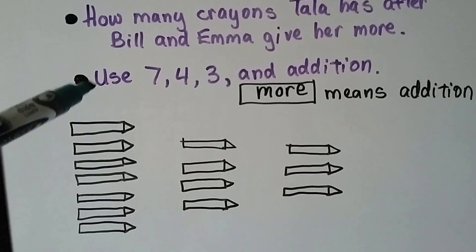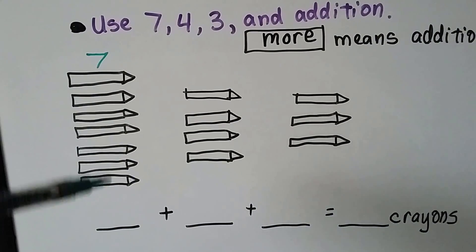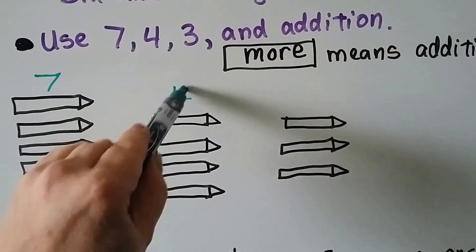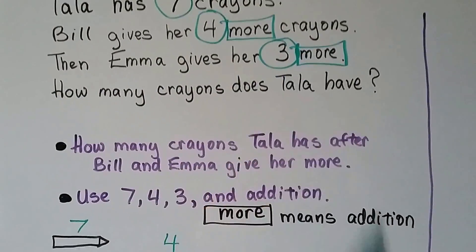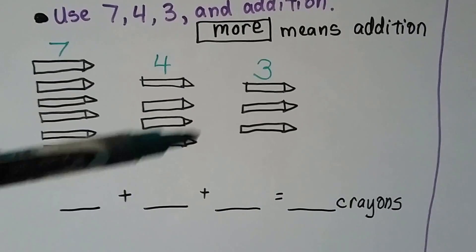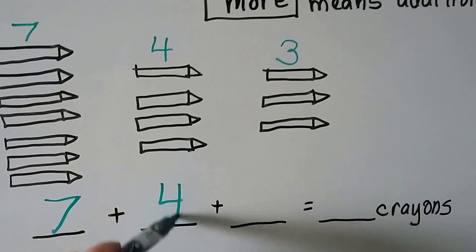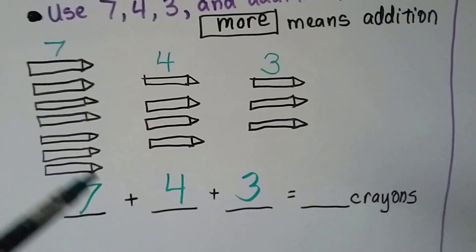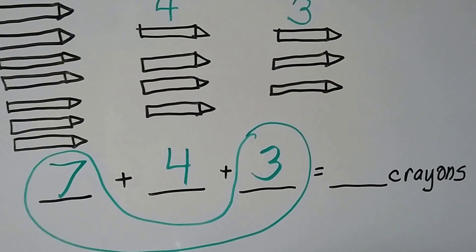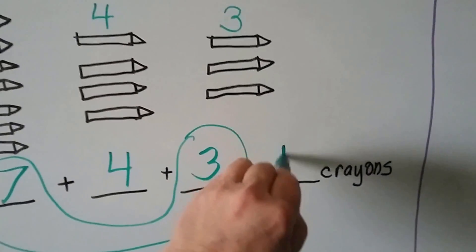We can draw crayons. Here's the seven that she had — one, two, three, four, five, six, seven. We can draw seven simple crayons. Here are four more from Bill and three more from Emma. We can add: seven, eight, nine, ten, eleven, twelve, thirteen, fourteen. We can write an addition sentence: seven plus four plus three. Seven plus three would make a ten — we take those two addends together and make a ten, then add the four: ten, eleven, twelve, thirteen, fourteen. So now she has fourteen crayons.